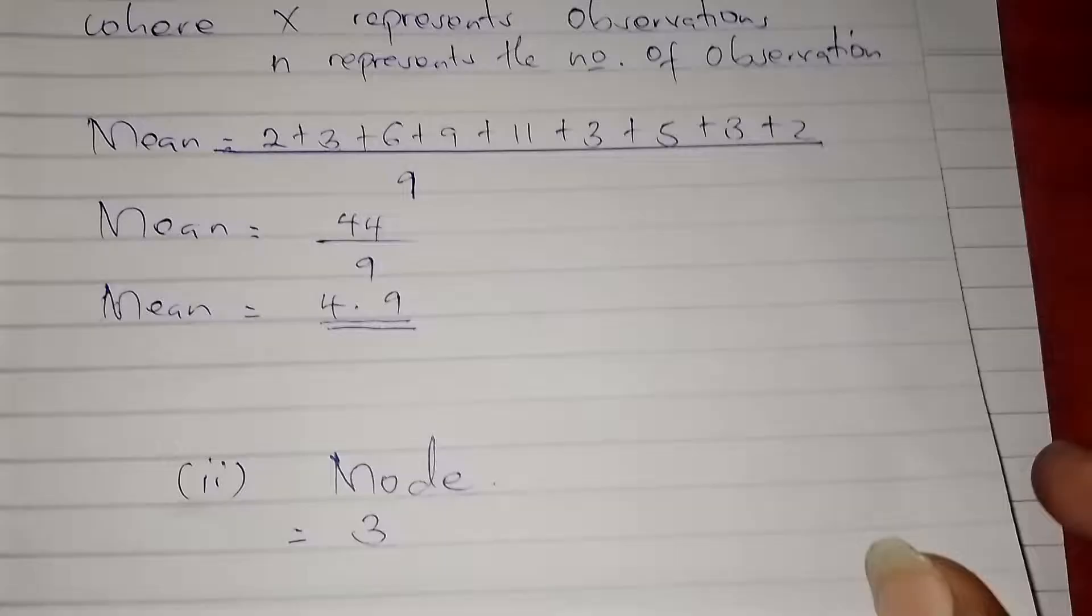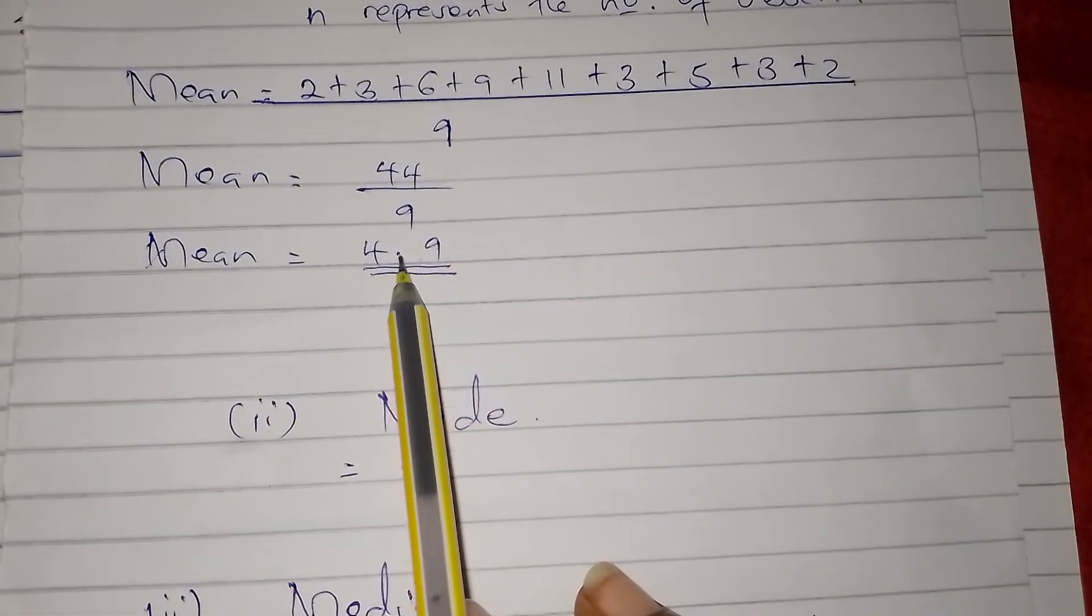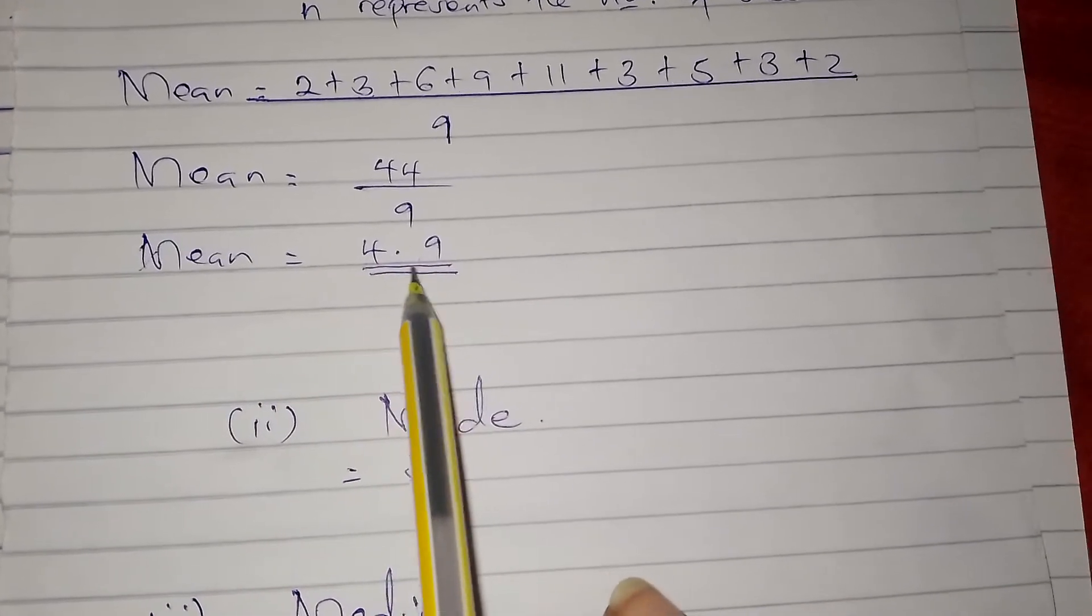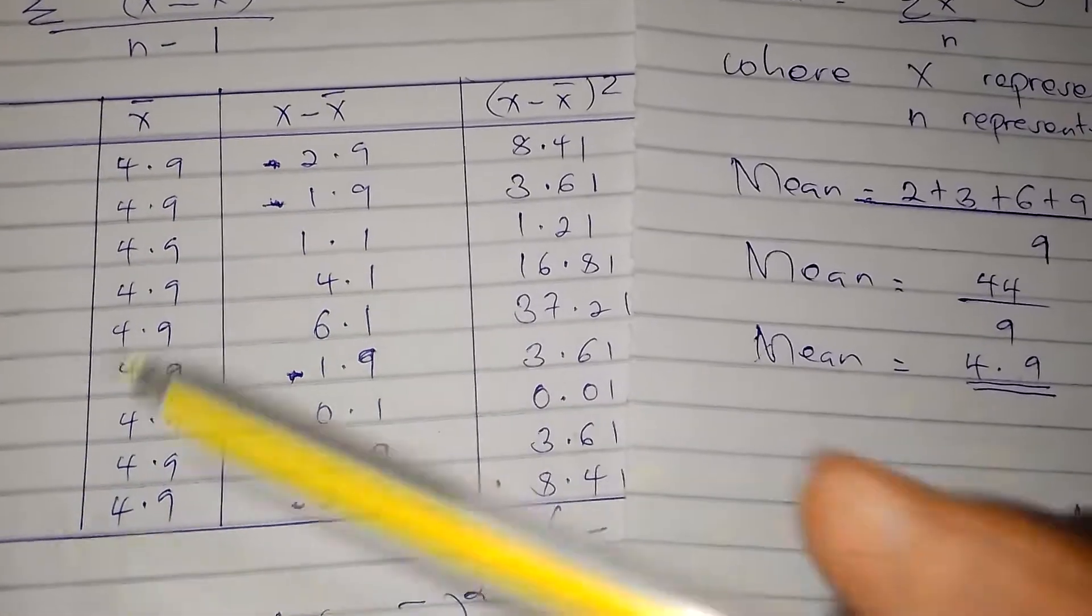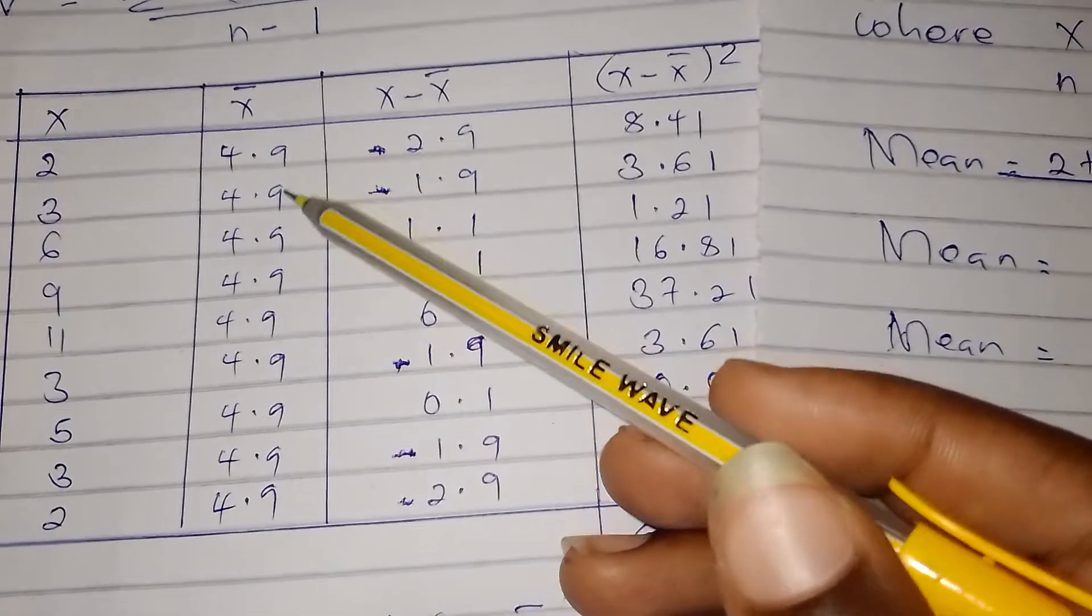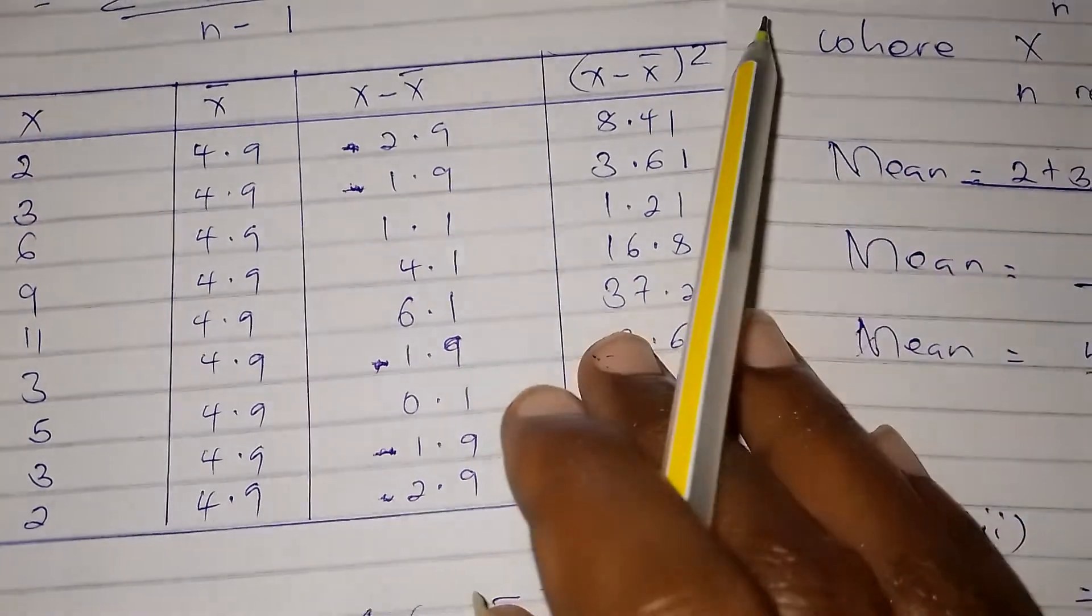x̄ is the mean we had calculated, which is 4.9. We put it here: 4.9. It does not change.